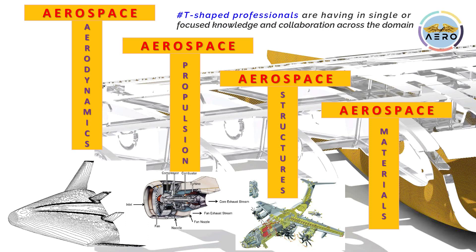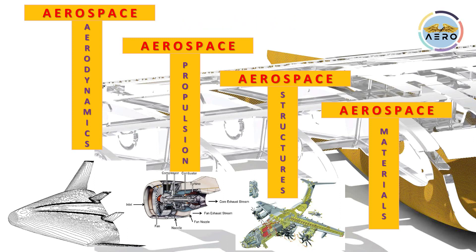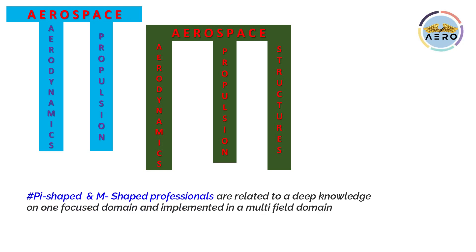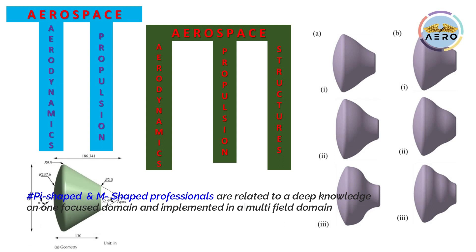T-shaped professionals have single or focused domain knowledge plus collaboration across domains — for example, how aerodynamics is implemented in supersonic, subsonic, or hypersonic fields. Pi and M-shaped professionals have deep knowledge in one focused domain implemented across multiple fields.